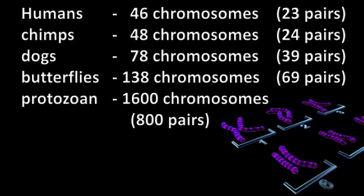Humans have 46 chromosomes — 23 pairs. Chimpanzees or apes have 48, so we lost one somewhere down the road if we evolved. Dogs have 78, butterflies 138, and a particular protozoan has 1,600 chromosomes. So the number of chromosomes clearly doesn't determine the complexity of the organism, assuming you consider a human being more complex than a protozoan. How that's explained evolutionarily, I've never heard.